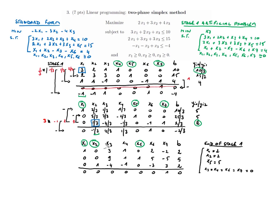After the row operations, the tableau shows basic variables x1, x2, and x5. x7 is non-basic and set to zero. The cost row signals the end of stage one. We can read the initial basic feasible solution: x1 = 2, x2 = 2, x5 = 5, and all other variables are zero.